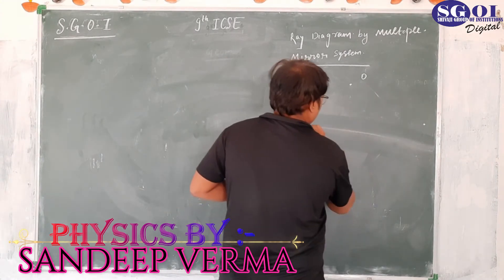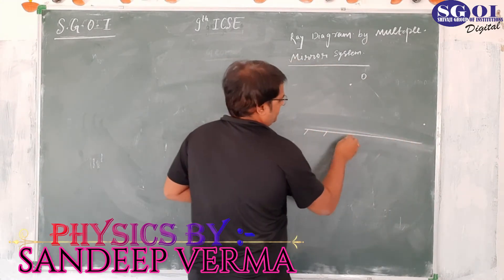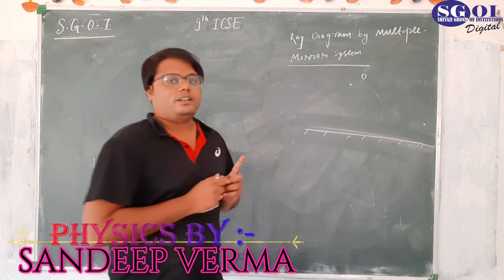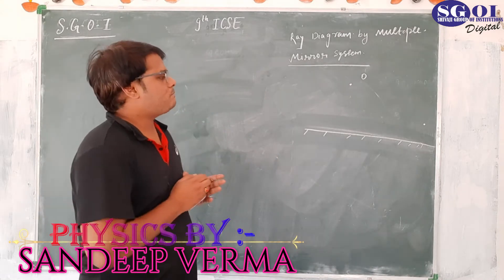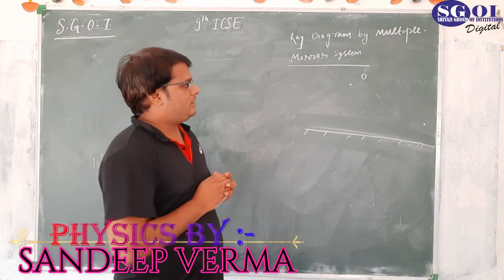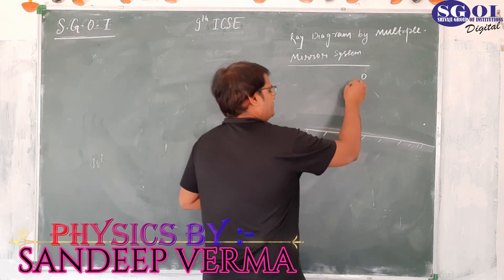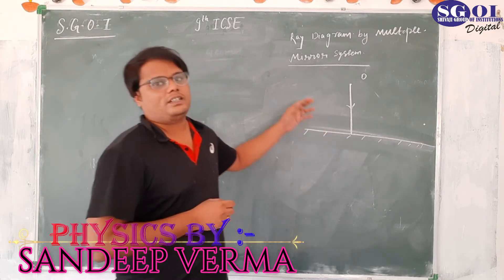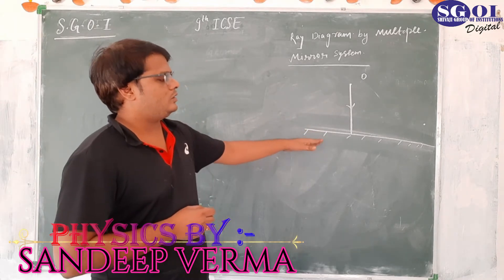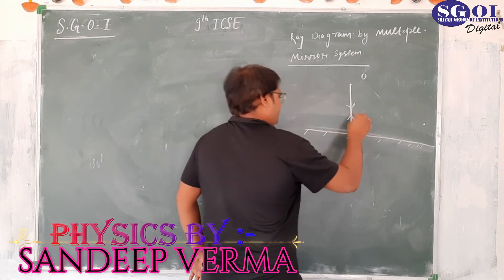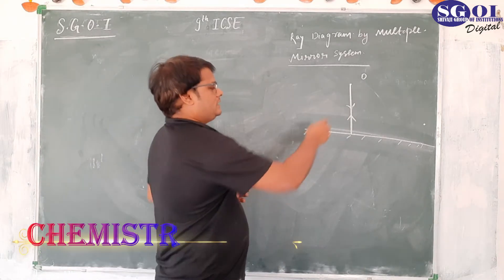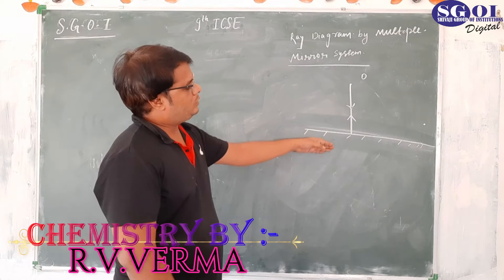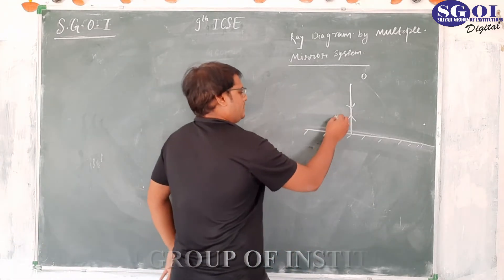The first thing to remember is that the first incident ray will always be perpendicular to the mirror — that way it will be very easy for us to draw. When a light ray is incident perpendicular to the mirror, it goes back on its own path. So this incident ray, after hitting the mirror, traces itself back — this is our reflected ray 1.